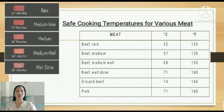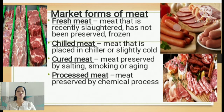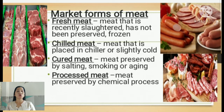Let us now discuss the market forms of meat. The first is fresh meat — meat that is recently slaughtered and has not been preserved or frozen. You can find fresh meat in wet markets and talipapa. The second is chilled meat — meat that is placed in a chiller or slightly cold; this is usually found in supermarkets.